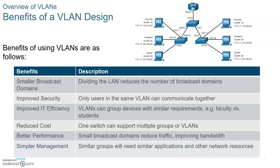Better performance means better speed because you have a smaller broadcast domain. You also have better security — you are combining users together that have similar tasks. For example, faculty access the same resources, students access the same resources, and engineering has different applications that salespeople don't need. If you are a salesperson, you'll be in a sales VLAN. This makes it a lot easier to manage.